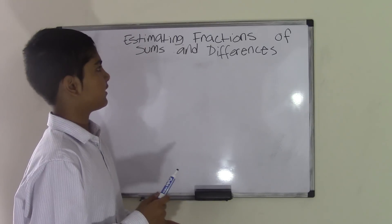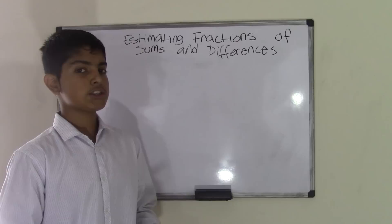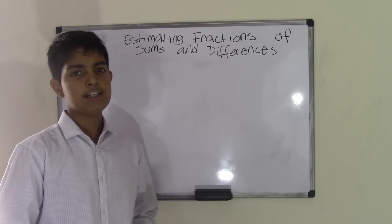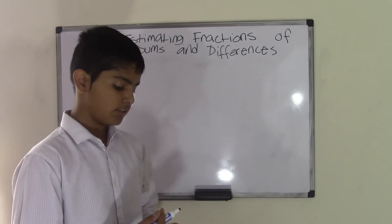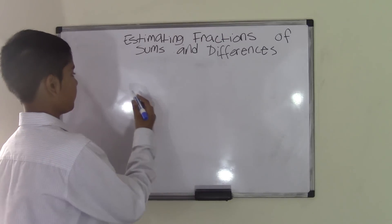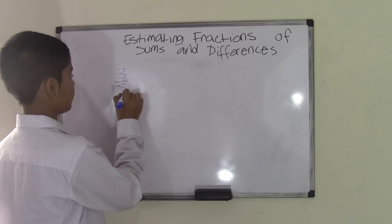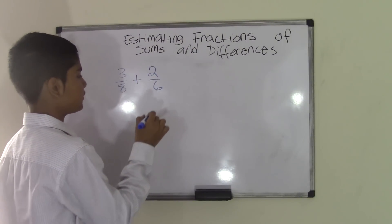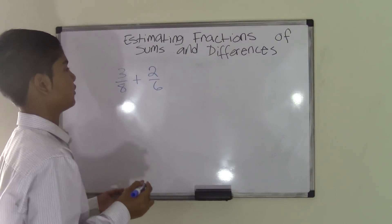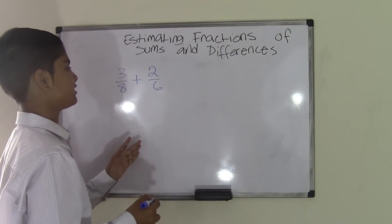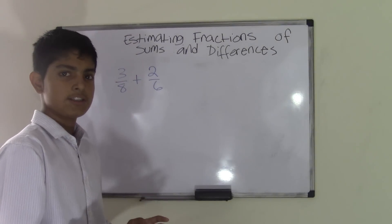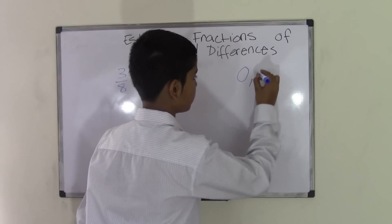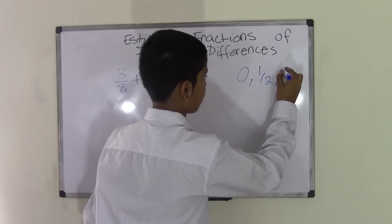We have done an estimating fractions topic video, but today's topics are sums and differences, or addition and subtraction. Let's take the two fractions, which are 3 eighths and 2 sixths. Before we do anything to these fractions, you can only estimate each of these fractions up to 3 points. The 3 points are 0, 1 half, or 1.